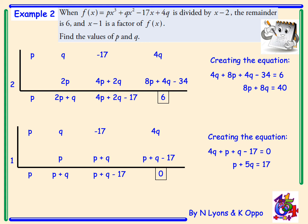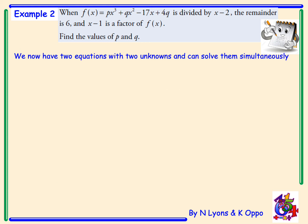We now have two equations with two unknowns. Therefore, we can solve them simultaneously. I need to ensure that I have the same coefficient in front of either p or q to solve simultaneously. Therefore, I'm going to divide the top equation through by 8, which will give me p plus q equals 5.